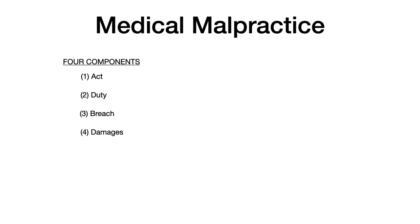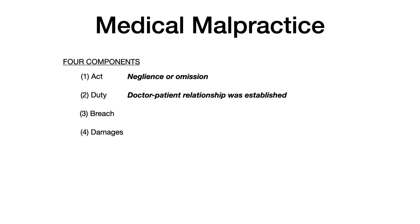The first is an act — an act of negligence or an act of omission. The second is a duty: the physician has a duty to the patient, meaning that a doctor-patient relationship had to have been established. This is an important component because if a physician is walking through the park and something happens to a patient, that physician is not liable under medical malpractice because they had no duty to that patient.